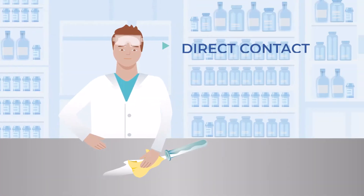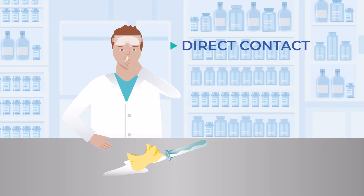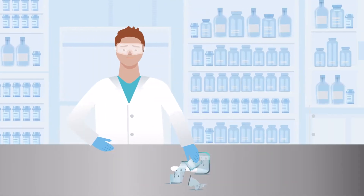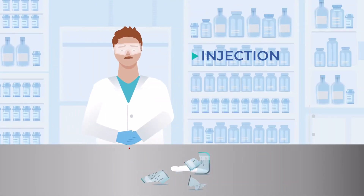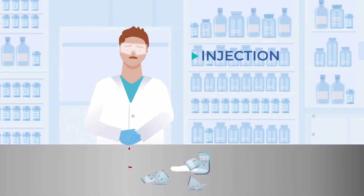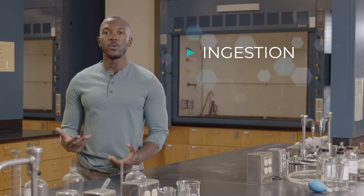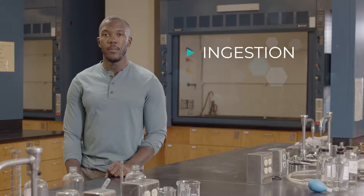The second most common route of exposure is direct contact with the skin or eyes. The tissues of the eye are extremely sensitive to damage. Two less common routes of exposure are ingesting a chemical and injecting a chemical through the skin. Injection can happen if you cut yourself on broken glassware that is contaminated with a chemical. Ingestion isn't very common since tasting, drinking, or eating lab chemicals or food is strictly forbidden in the lab.